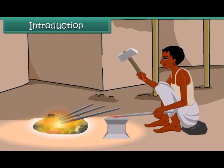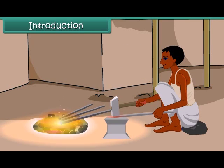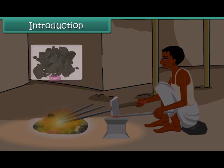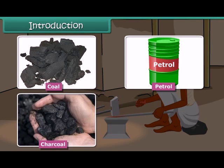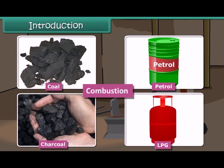The blacksmith burns coal to get hot iron which can be beaten to desired shape. A variety of fuels is used in daily life such as coal, petrol, charcoal, LPG, etc. Do you know which chemical process is taking place during the burning of these fuels? It is combustion. In this lesson you will learn about combustion of fuels.